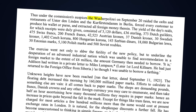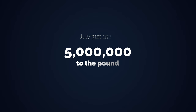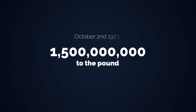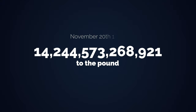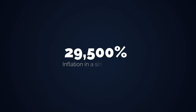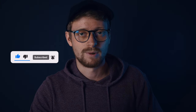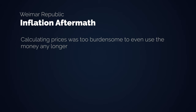On 20 September, Germany established the Wucherpolizei, which raided restaurants in Berlin and forced everyone there to hand over all the foreign currency they had. This desperation tactic by the state yielded some results, but obviously something goes on only until the moment when it cannot — and that moment comes suddenly. Business became completely impossible at this point and no one would even accept the mark anymore. Calculating the fair price of goods in marks became too burdensome, and all debts and savings had been completely extinguished.